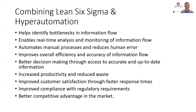Combining Lean Six Sigma and hyperautomation will help us identify bottlenecks in the information flow, enable real-time analysis and monitoring, automate manual processes, and reduce human error to eliminate variation in our information assets. Managers, executives, and business owners will get better decision-making. We'll get more productivity out of our systems and employees, reduce waste, and improve customer satisfaction through faster response times and faster time to market. If you're in an industry with regulatory or compliance requirements, we can help automate some of those requirements. It gives you a much better competitive advantage in the market as well.